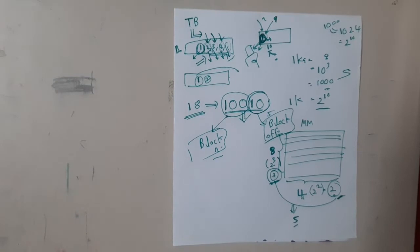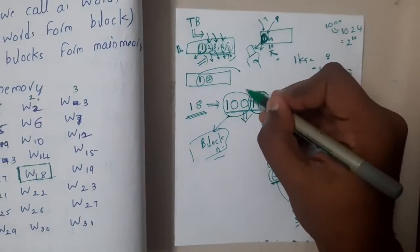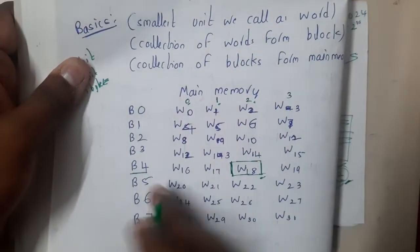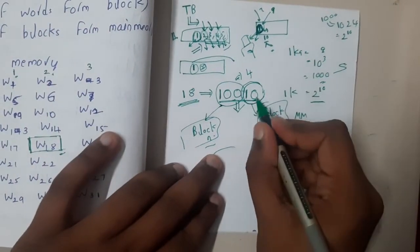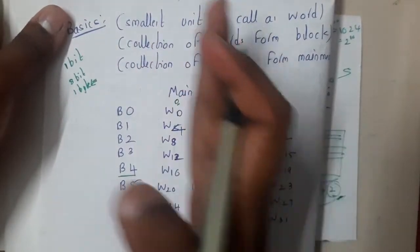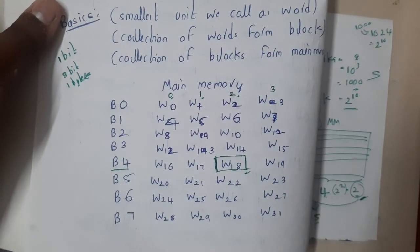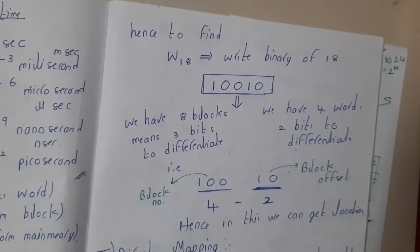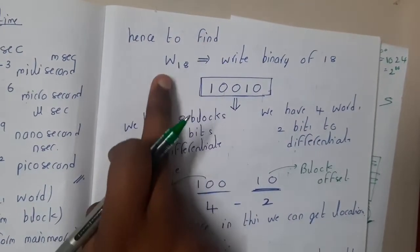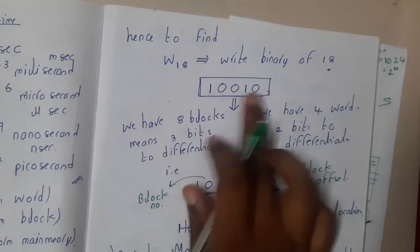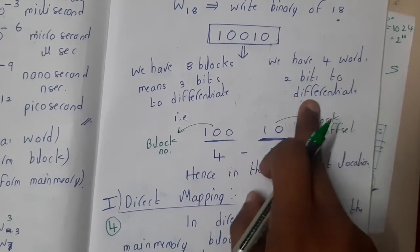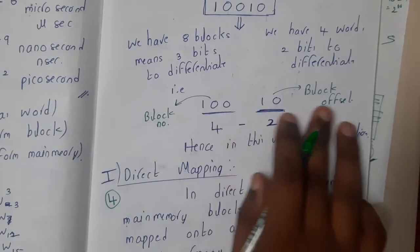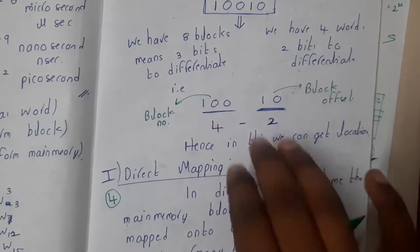The first 3 bits of binary 10010 are 100, which equals 4 — confirming word 18 is in block B4. The last 2 bits are 10, which equals 2 — indicating block offset 2, meaning column 2. So word 18 is found at block 4, offset 2. This is how the computer performs address mapping. This concept of block number and block offset will be used in direct mapping, associative mapping, and set associative mapping.